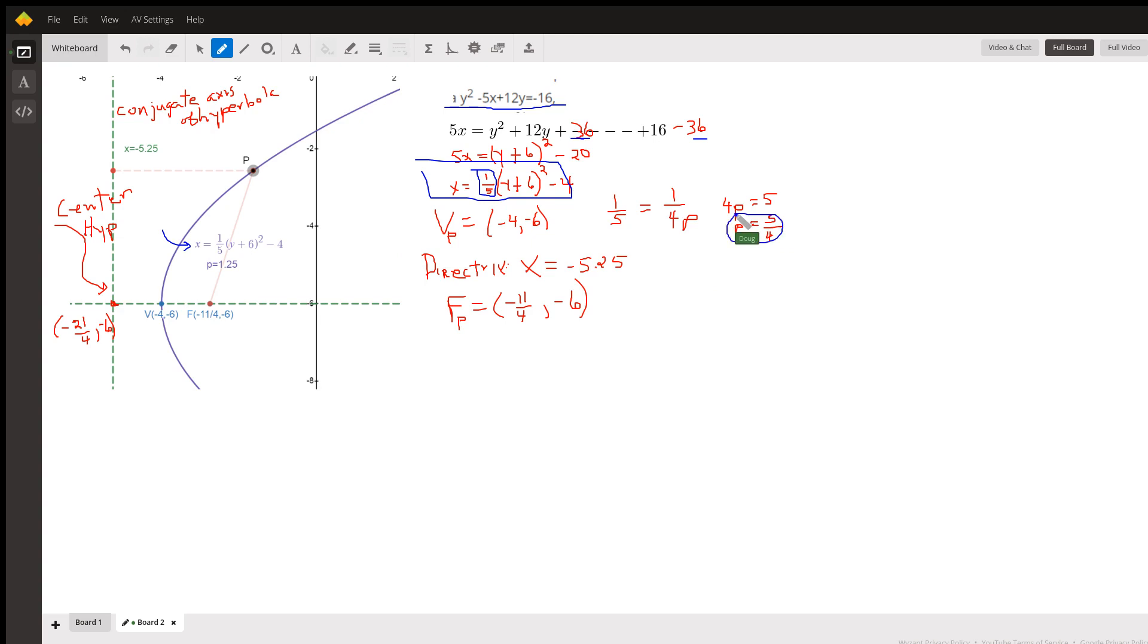And 5 fourths is the directed distance from the vertex to the focus or from the vertex to the directrix. This distance right here is 5 fourths. And in vertex form, we can easily identify the vertex of the parabola. It's at negative 4, negative 6.